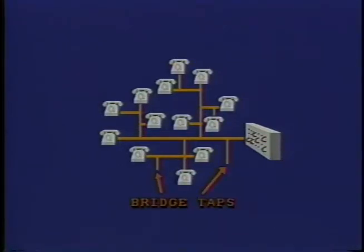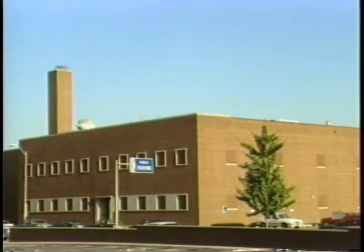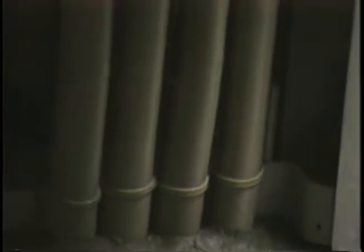One result of this evolution of the system is that some phone wires from your office to the phone company can have extra lengths of wire that are no longer active. These extra lengths are called bridge taps. If a phone line is more than six miles from the central office, devices called loading coils are put on the wires. Loading coils are used to improve the quality of voice transmission by concentrating the energy in the voice range. At the phone company's central office, the cable is terminated on an apparatus called a mainframe.